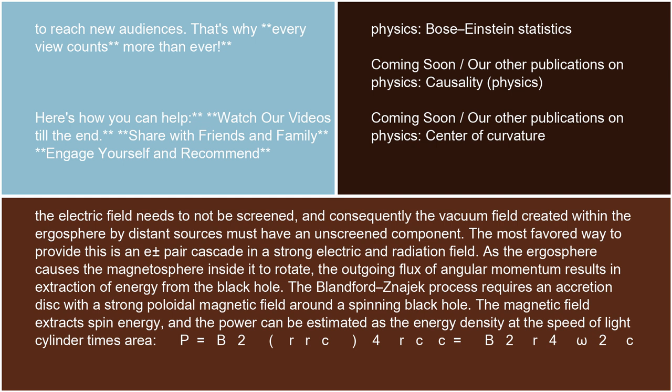The most favored way to provide this is an electron-positron pair cascade in a strong electric and radiation field. As the ergosphere causes the magnetosphere inside it to rotate, the outgoing flux of angular momentum results in extraction of energy from the black hole.